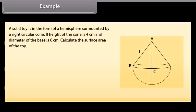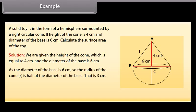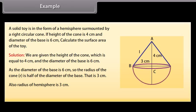A solid toy is in the form of a hemisphere surmounted by a right circular cone. If the height of the cone is 4 cm and the diameter of the base is 6 cm, calculate the surface area of the toy. We are given height of cone H = 4 cm and diameter = 6 cm, so radius R = 3 cm. The radius of the hemisphere is also 3 cm. To find the surface area we need the curved surface area of the cone and of the hemisphere.